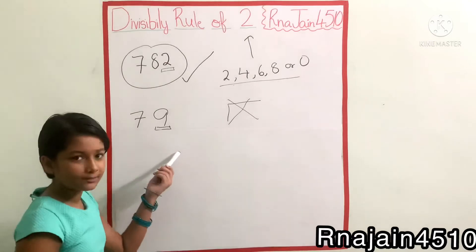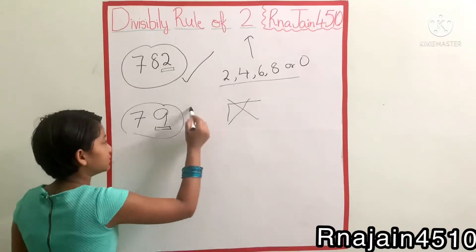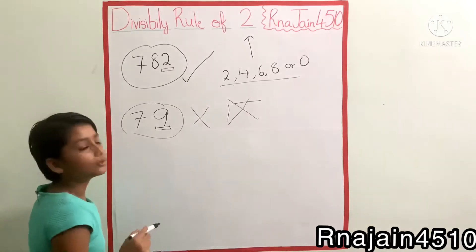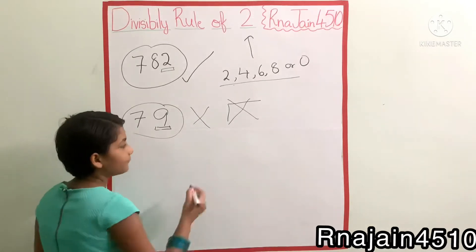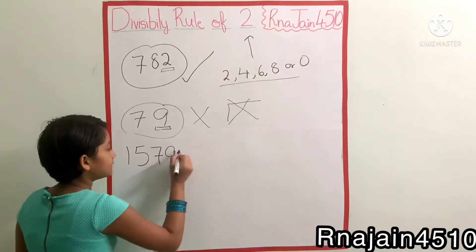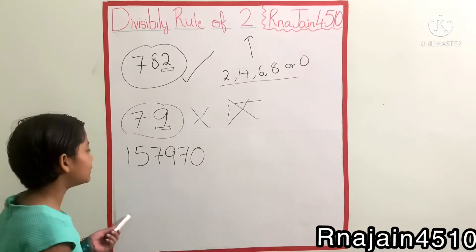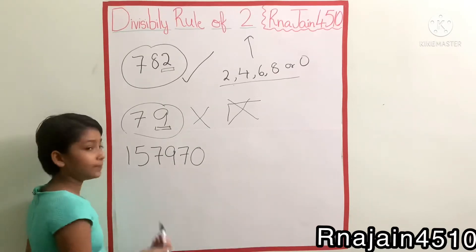So the whole number is not divisible by two. Another number we will take, 157970. So is it divisible by two or not? It is a very big number.